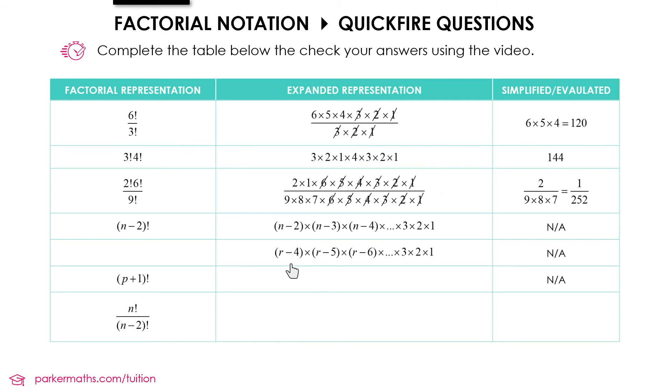Next up we've got r minus 4 times r minus 5 times r minus 6. So we're subtracting 1 each time. And we're keeping going until we get to 1. So that would be r minus 4 factorial.